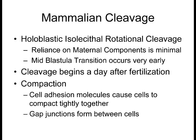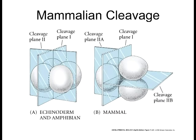Mammalian cleavage is holoblastic isolecithal — iso meaning all blastomeres from cleavage are the same size, because there's no yolk and no animal-vegetal pole difference. It's also rotational because the cleavage plane changes with each division rather than always dividing along the same axis. In amphibians you get perpendicular cleavage consistently, whereas in mammals the cleavage plane rotates and changes in these initial stages.